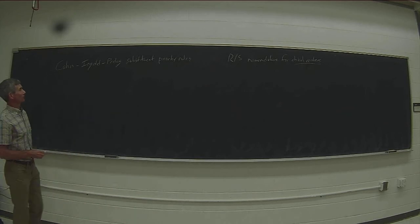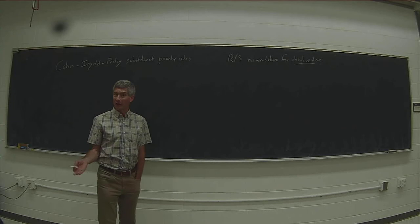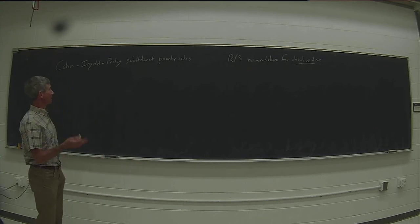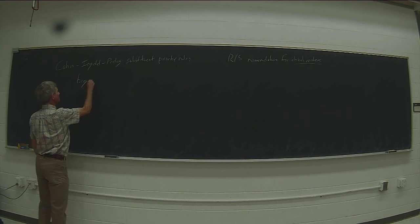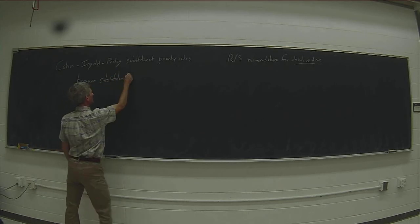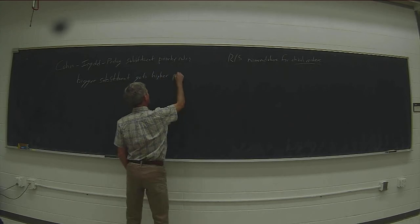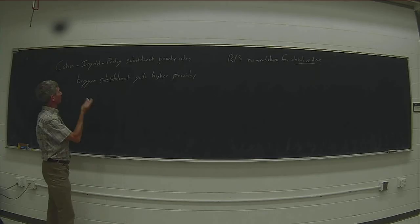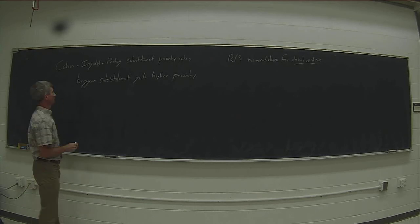The Cahn–Ingold–Prelog priority rules are very simple — they're based on the same principle as football recruiting, which is that size matters. The bigger substituent gets the higher priority. But it's not the total size of the substituent that matters; it's the size of the atom that's directly attached.